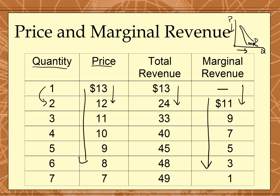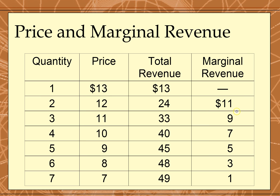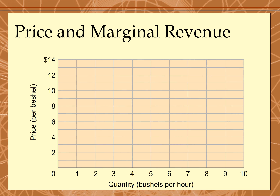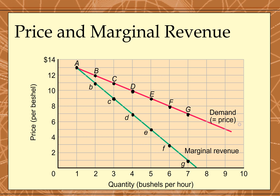This is important when we try to determine how much to produce to maximize profit. We're going to find where the last unit produced has a marginal revenue — the amount of money that last unit generated — that equals its marginal cost, the cost incurred by producing that last unit. The marginal revenue curve is twice as steep as the demand curve.